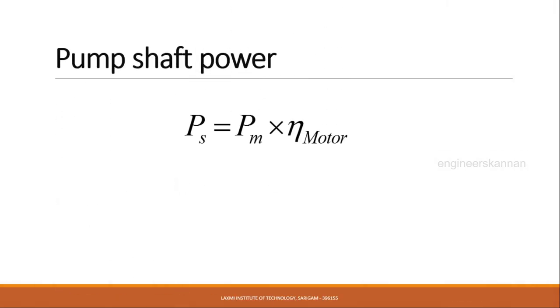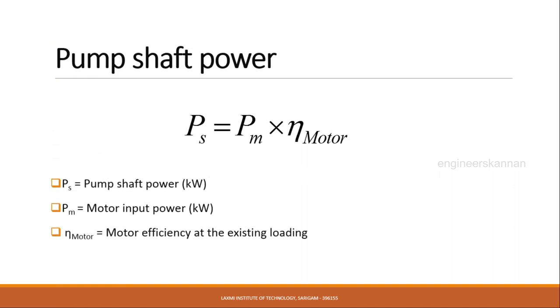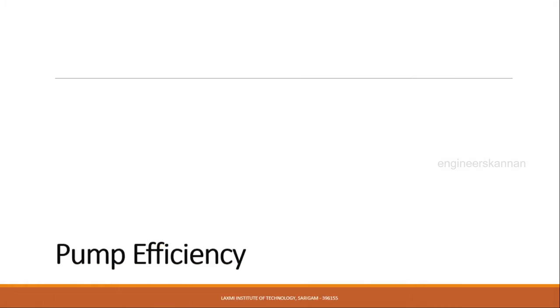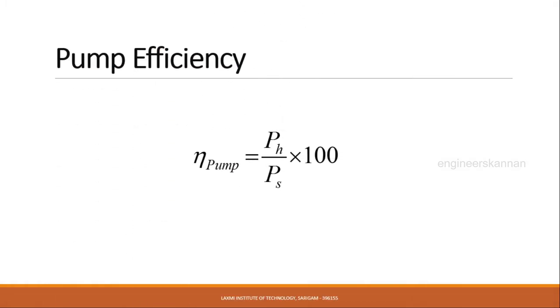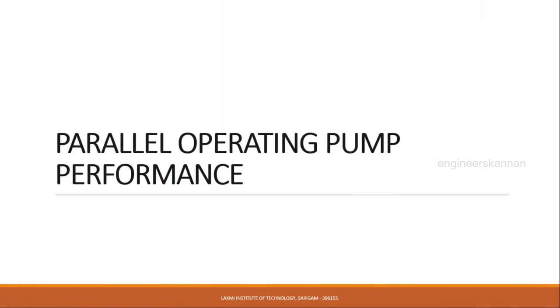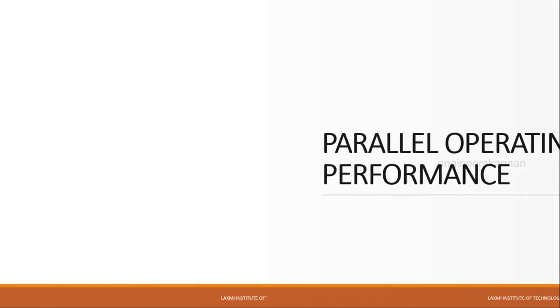The next parameter is pump shaft power, P, which is generally calculated with the help of motor input power and efficiency of the motor for the existing load. Next is pump efficiency, generally mentioned as the useful work done by the pump divided by the power input given to the pump shaft.